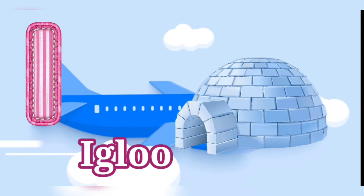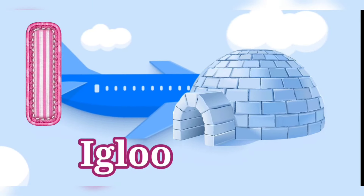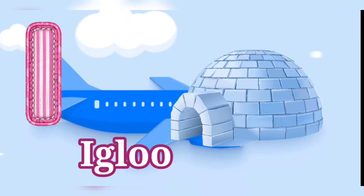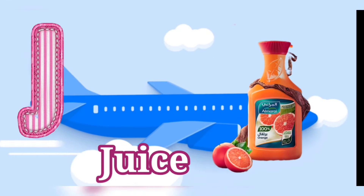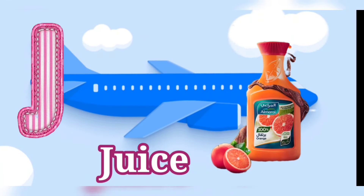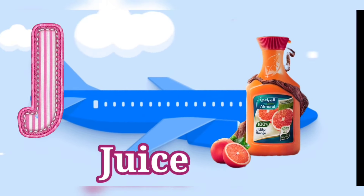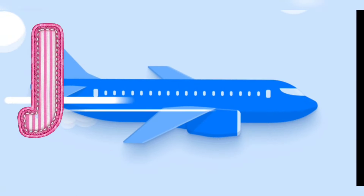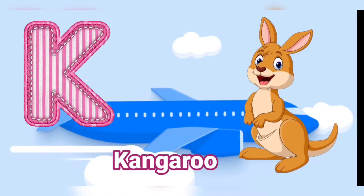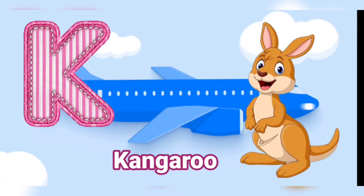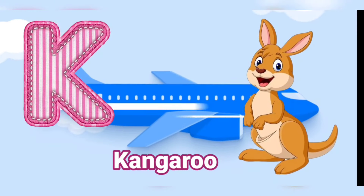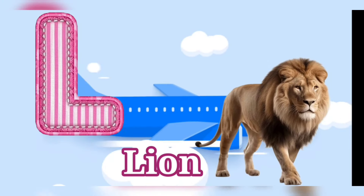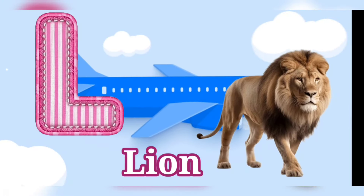I is for igloo, i-i-igloo. J is for juice, ju-ju-juice. K is for kangaroo, k-k-kangaroo. L is for lion, lion.